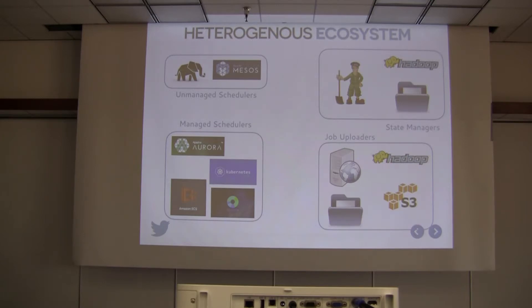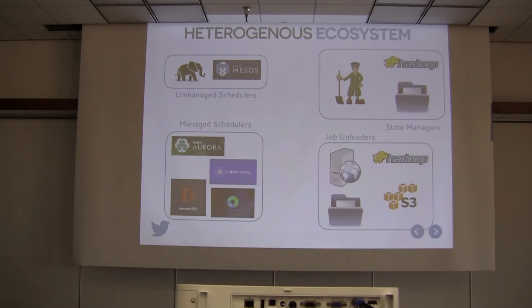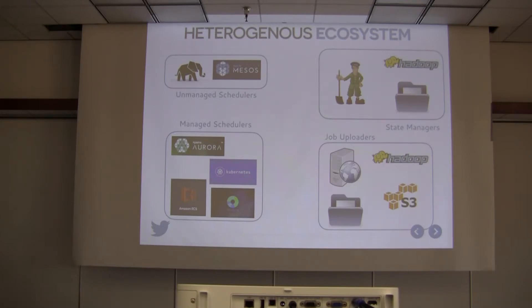Now I'll zoom in on a couple of design issues. The big data ecosystem continuously changes — new software keeps coming up and you have to adopt it. There are schedulers like YARN and Mesos, managed schedulers like Aurora, Kubernetes, ECS, and Marathon, state managers like ZooKeeper or local file system, and distributed storage systems like HDFS or S3. We want the core to remain stable — so how do you survive in this changing environment?